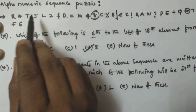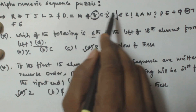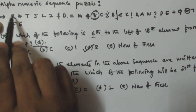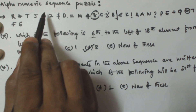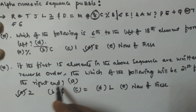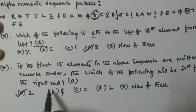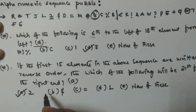To confirm: when the first 15 elements are reversed, R comes here, * comes here, T comes here, J comes here. So R becomes position 16 from the right, and counting 16 17 18 19 20 21 — the 21st element from the right is 2. Whenever the first 15 elements are written in reverse order, the 21st element from the right becomes 2. Thank you for watching — if you have any doubts please leave a comment and subscribe to my channel.